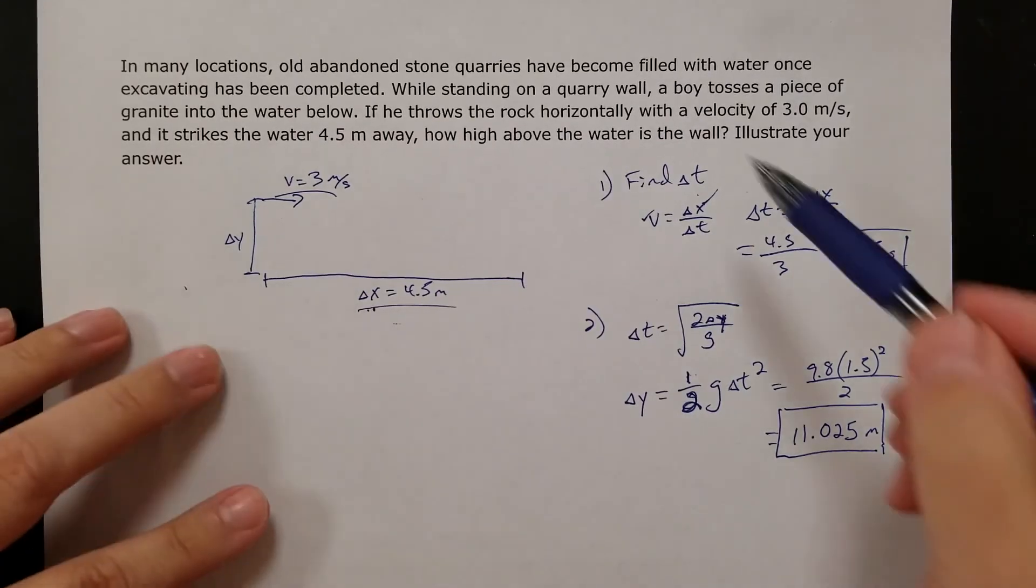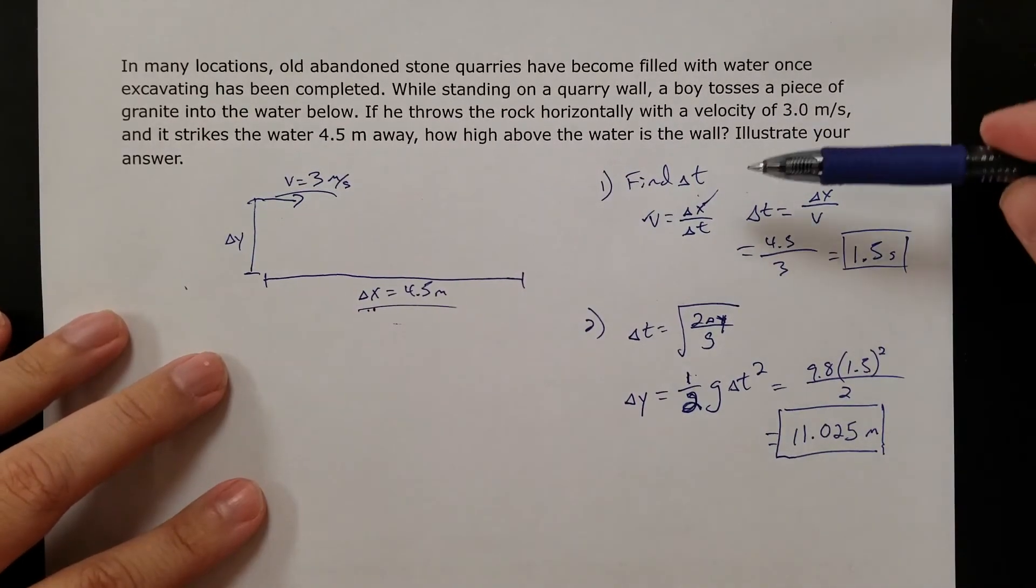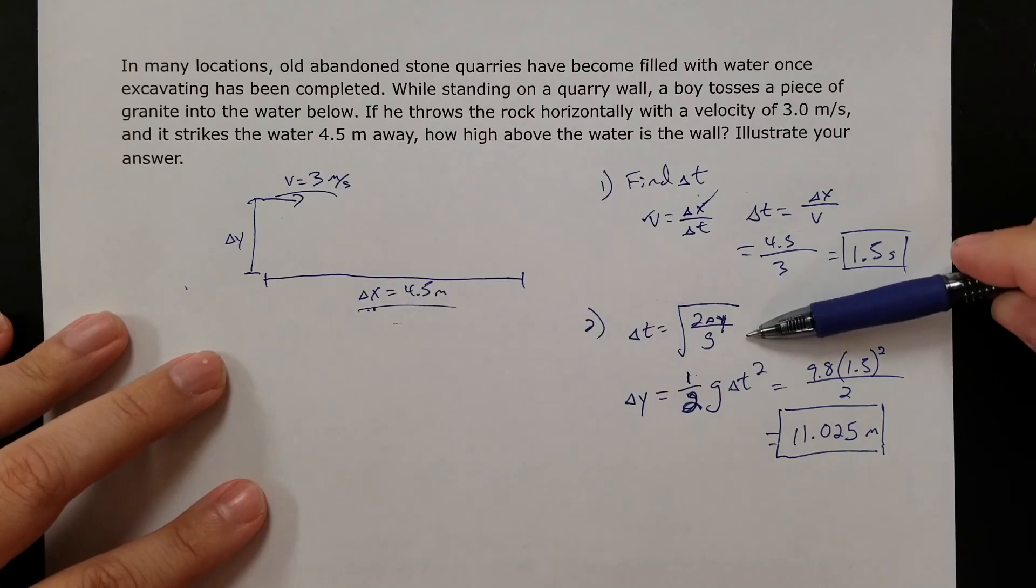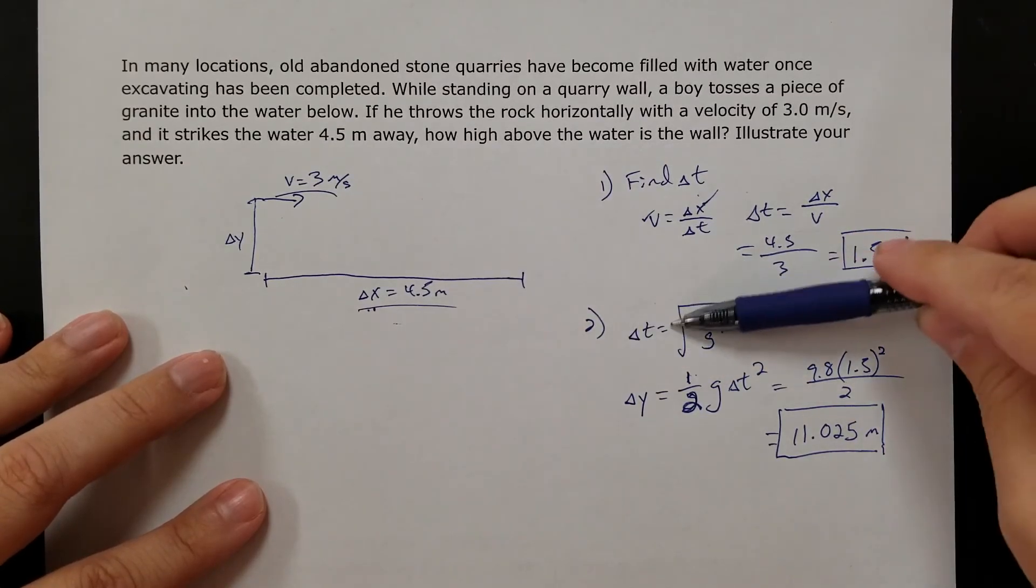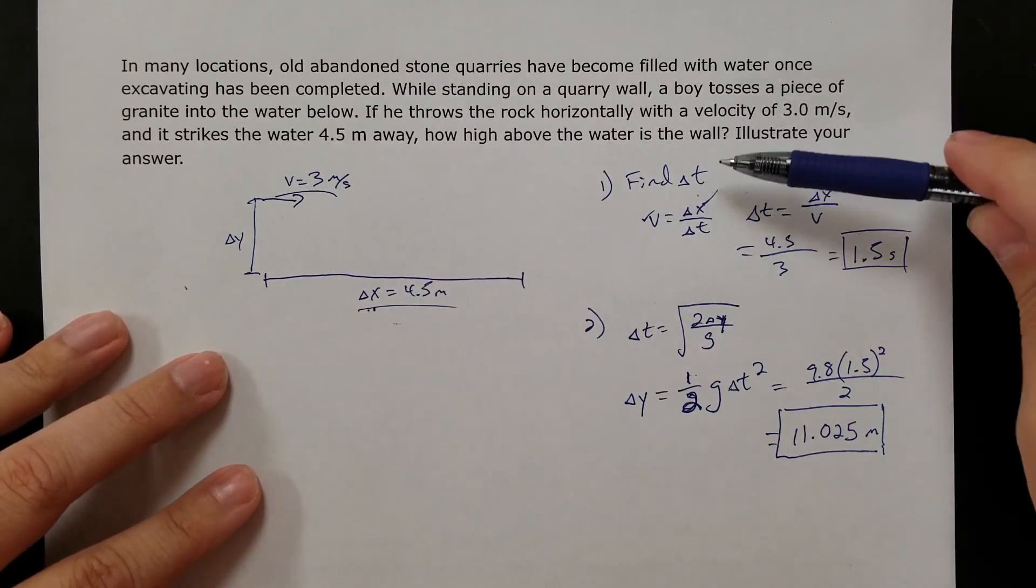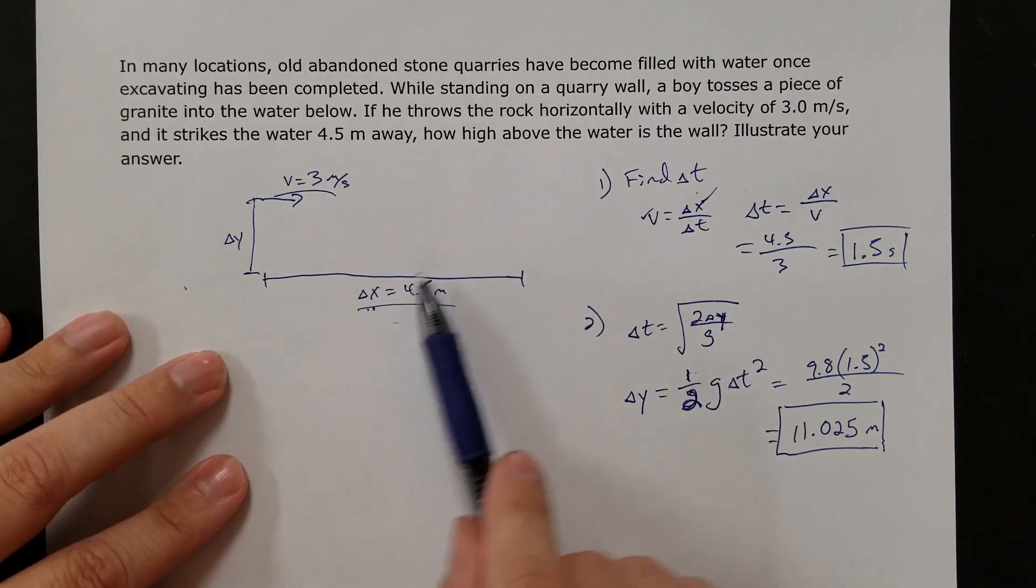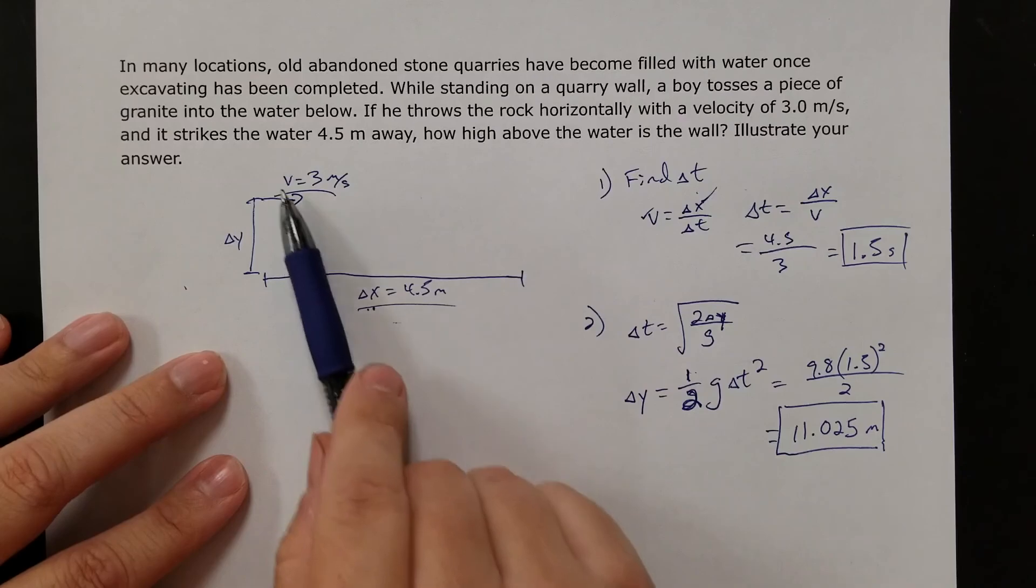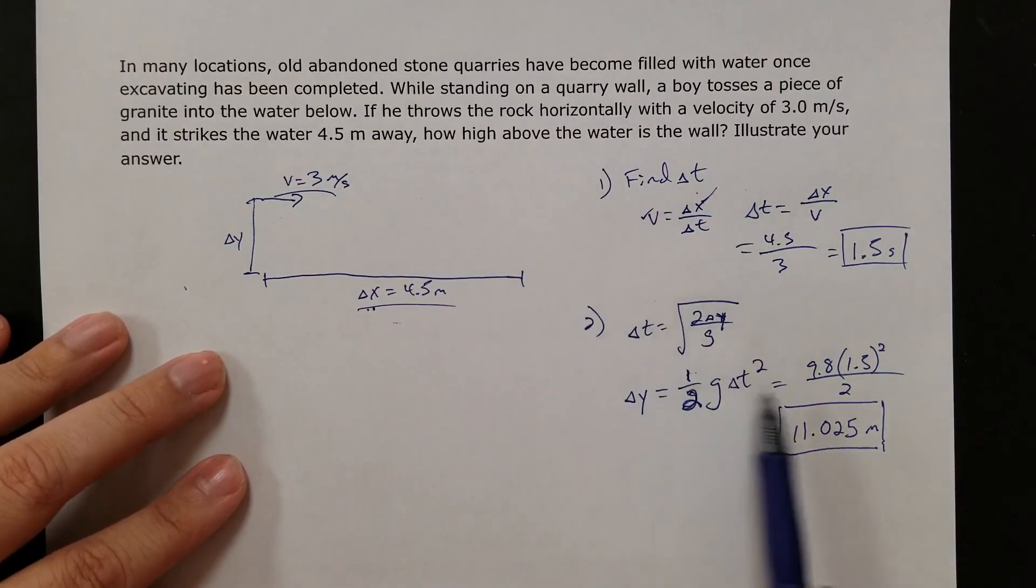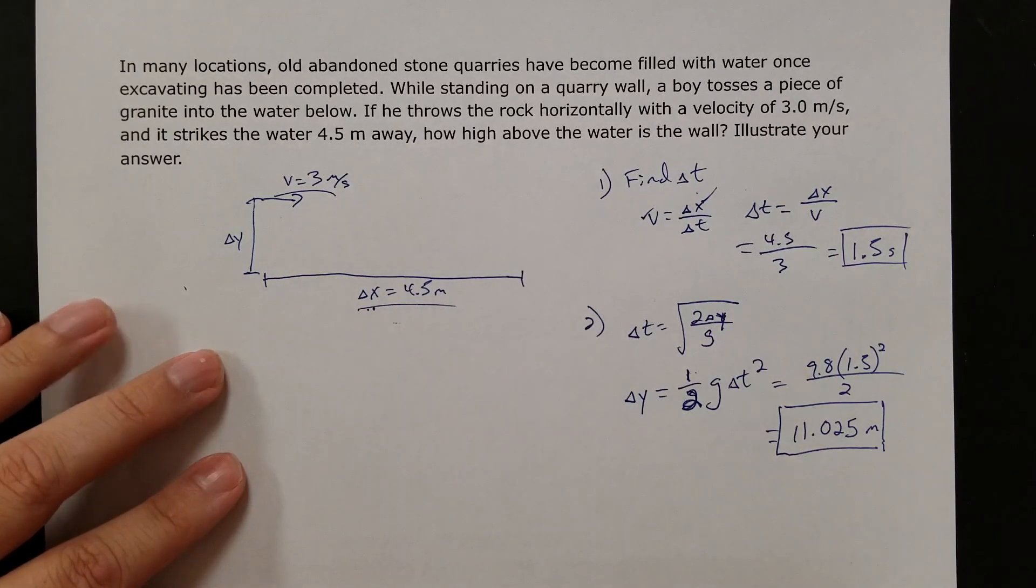So in this case, I still followed the same steps. Except when I got stuck on this one, if I try to use this equation, oh no, that doesn't work. So I need to think of another way I can get time. So I had to come over here and say, oh, well, I know in the x direction, I already know my two variables. So I had to use that to get time and then rearrange this equation to get the height.